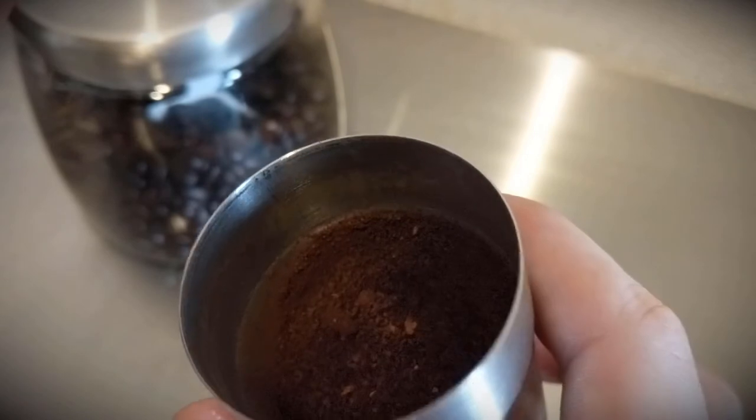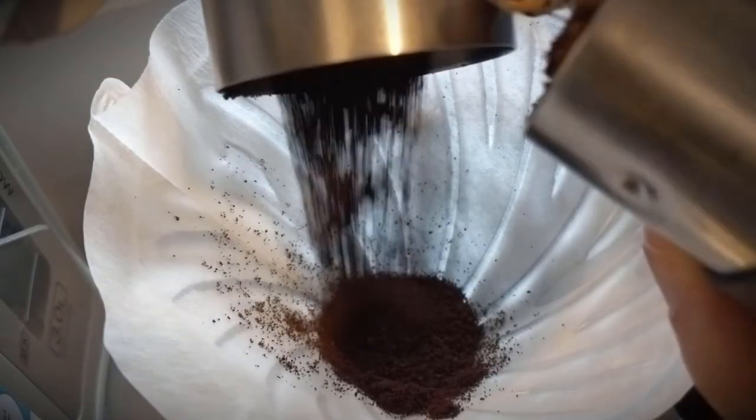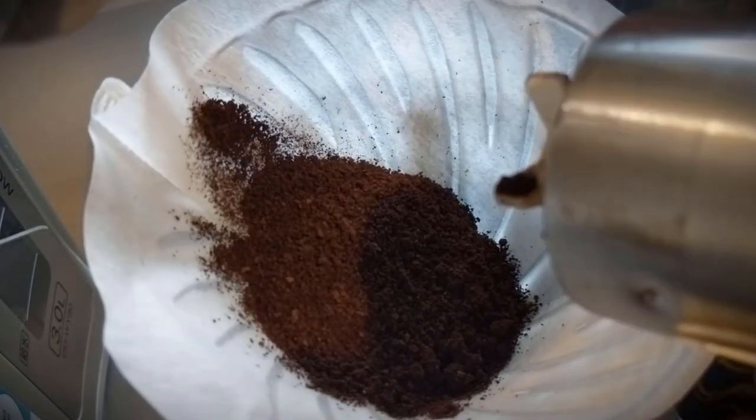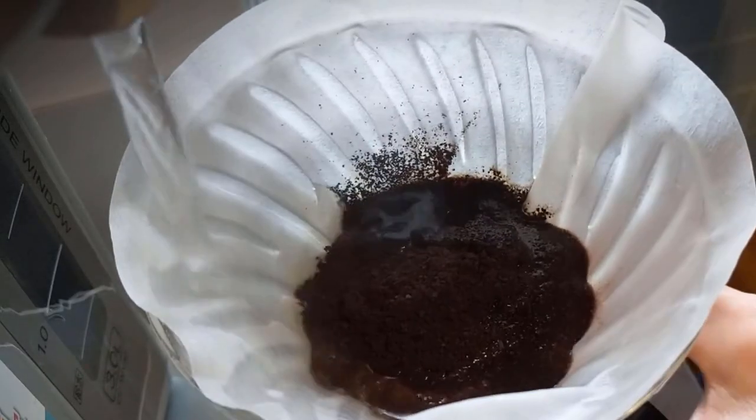Once I'm finished grinding, I put the freshly ground beans, now called grounds, into the paper filter. And I put the dripper on the top of my mug as well.